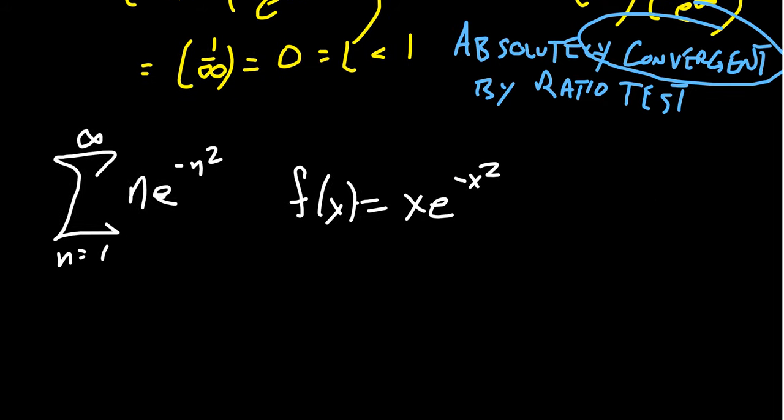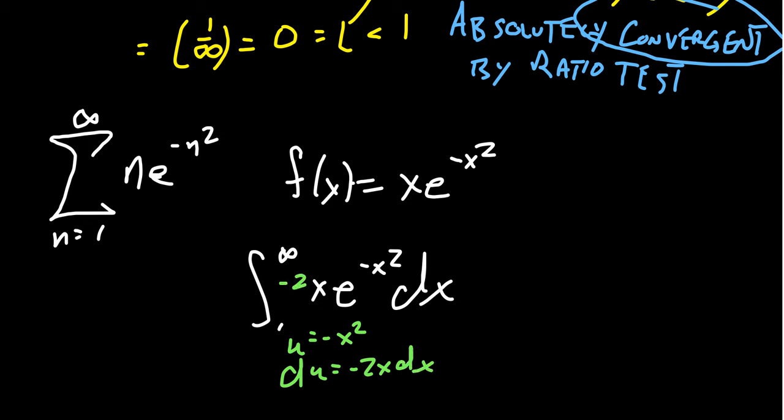We want to integrate from 1 to infinity, x e to the negative x squared dx. We can actually pull off some type of u substitution. Take u to equal negative x squared. So du equals negative 2x dx, for which we need a negative 2 right here. So we'll divide by negative 2 to compensate for that.